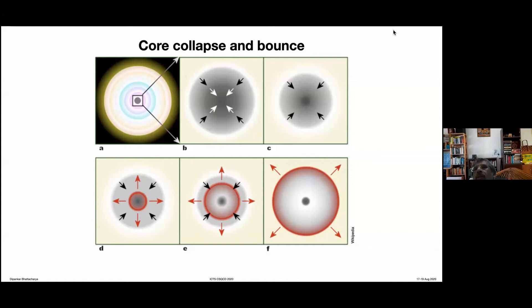So this is where we stopped yesterday. We have basically looked at the journey of a star from the beginning — the formation starting with hydrogen burning — all the way up to end products as either a white dwarf, or a violent end in a supernova and a compact neutron star, or if it's very massive, it could even be a black hole.